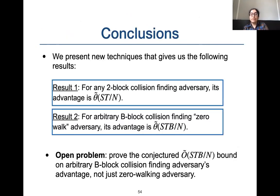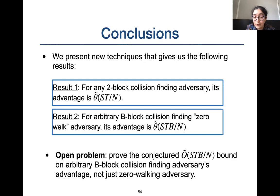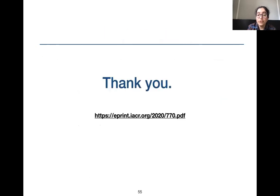Finally, to conclude: in this work we present new techniques to prove two main results. First, for any two-block collision-finding adversary, its advantage is tightly bounded up to polylog factors to order ST/N. Second, for any B-block collision-finding zero-walk adversary, its advantage is tightly bounded up to polylog factors to order ST/N. We could not prove a bound for arbitrary-length collisions for all adversaries, which remains an open problem. Thank you — for more details, please see our paper available on ePrint.